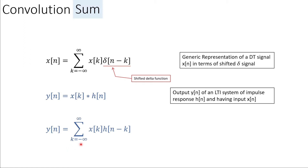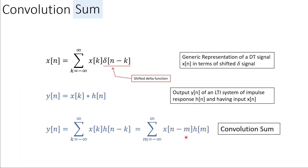Using this equation, we can express y[n] as the sum of the product of the input discrete-time sequence times the shifted impulse response h. This can be reversed also — we can shift x and keep h static. The result of both methods will remain the same. This is called the convolution sum. The convolution integral applies to continuous-time signals, while the convolution sum applies to discrete-time sequences.